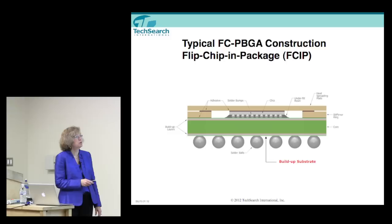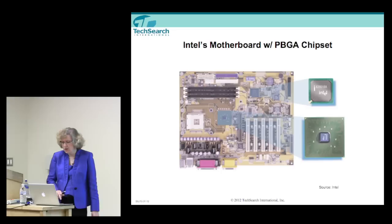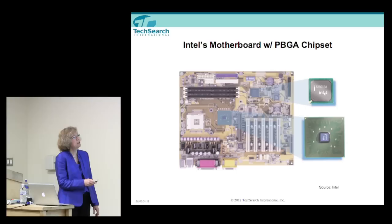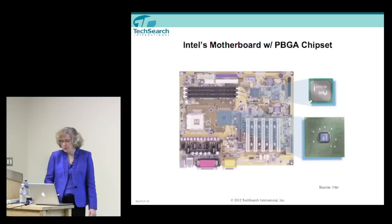Instead of wire bonds, some packages use a flip chip approach where the die is mounted with little bumps onto a carrier — either laminate or ceramic — inside the package, with solder balls on the bottom to attach to the board. This is a typical motherboard — an old Intel motherboard — and you can see where the package would fit. This is a flip chip package with the exposed die and no lid, and these are very common in processor packages.